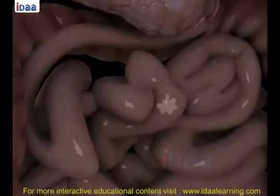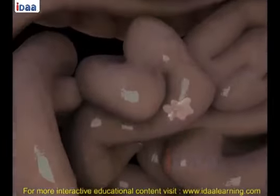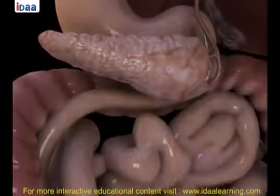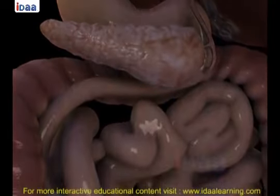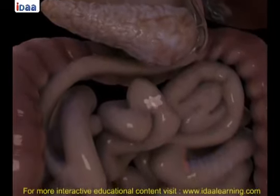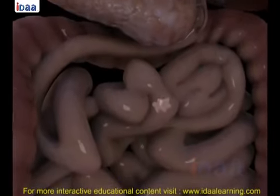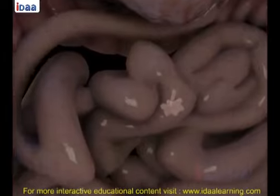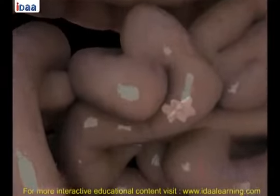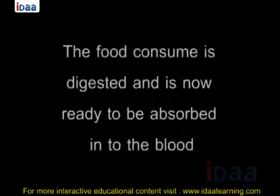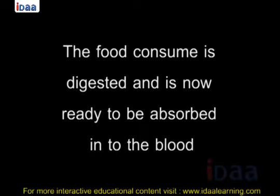The carbohydrates in the food break down into sugars like glucose, fats into fatty acids and glycerol, and proteins into amino acids. The food consumed is fully digested and is now ready to be absorbed into the blood.